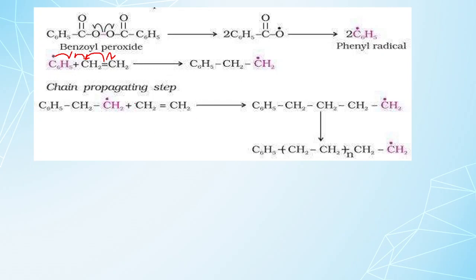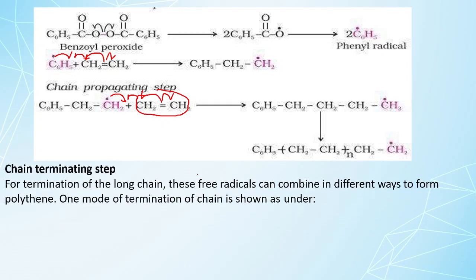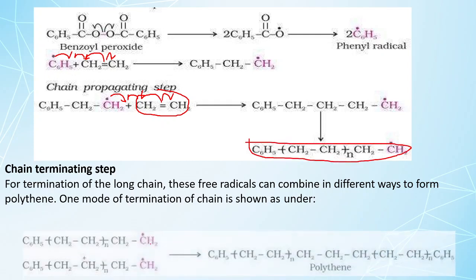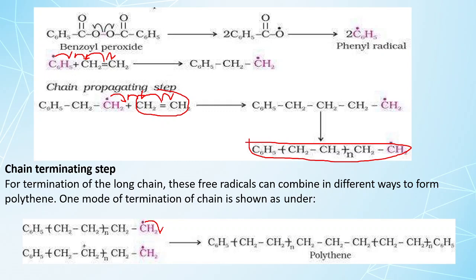In chain propagation, the new radical again attacks another ethene molecule — one electron forms a bond and another free radical is generated, continuing the chain. In the chain terminating step, two radical molecules combine to form a long chain, completing the polythene molecule. This is the free radical mechanism of addition or chain growth polymerization.